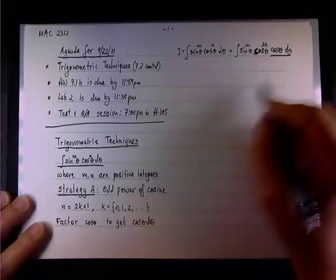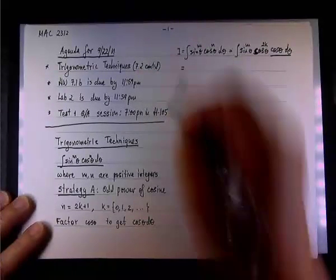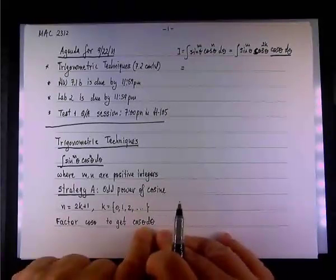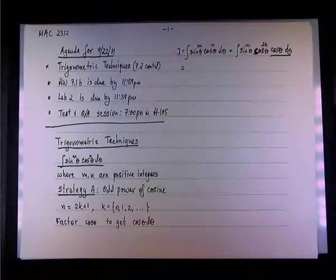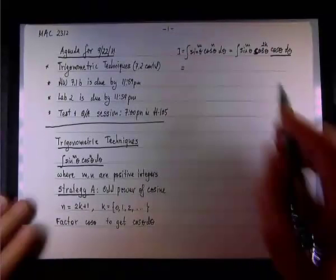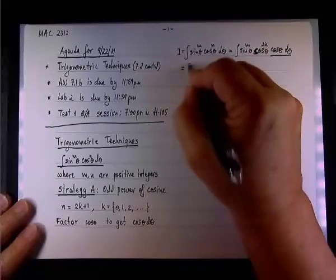So the next thing I want to do is I want to express the cosine in terms of sine. We know that cosine theta d theta, the anti-derivative of cosine theta d theta, is sine theta. So we're interested in expressing everything in terms of sine theta.